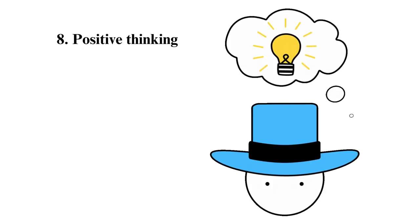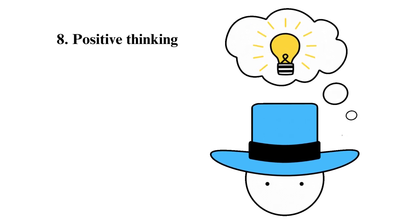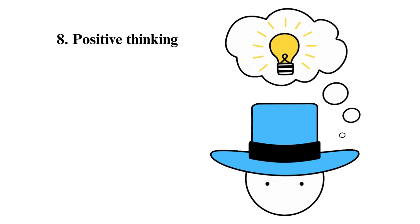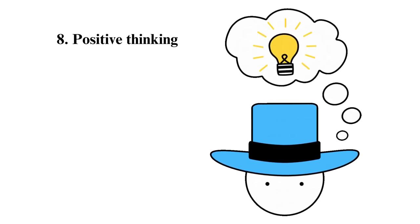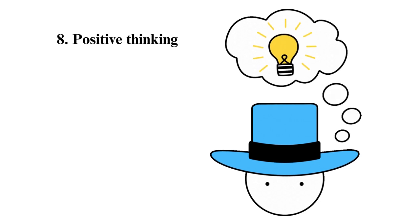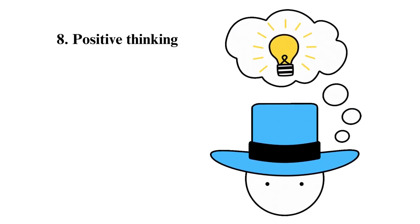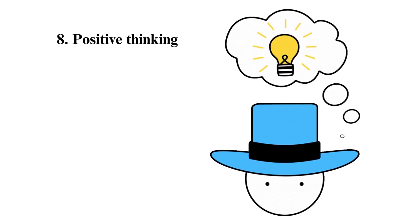8. Positive thinking. Everyone makes mistakes. Even better, most people are nervous about speaking in public, hence they are likely to be sympathetic to others. Most people are also not critically thinking about you, but are just listening to you talk. As such, do not overthink it since they will likely make mistakes as well.